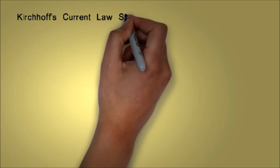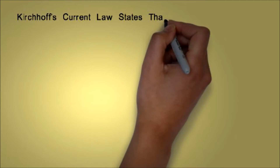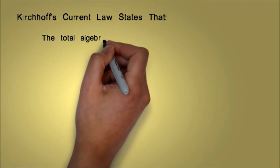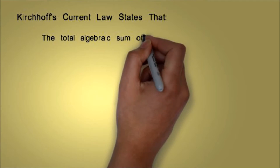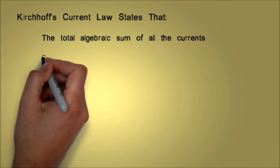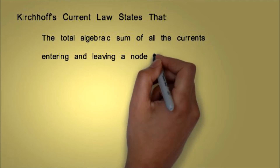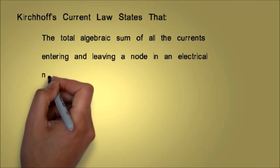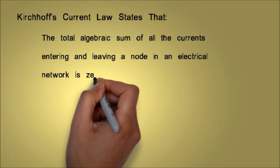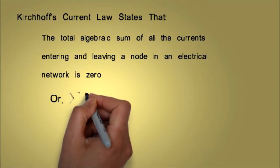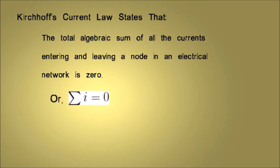Kirchhoff's Current Law states that the total algebraic sum of all the currents entering and leaving a node in an electrical network is zero. Mathematically, the summation of all the currents at a node is equal to zero.